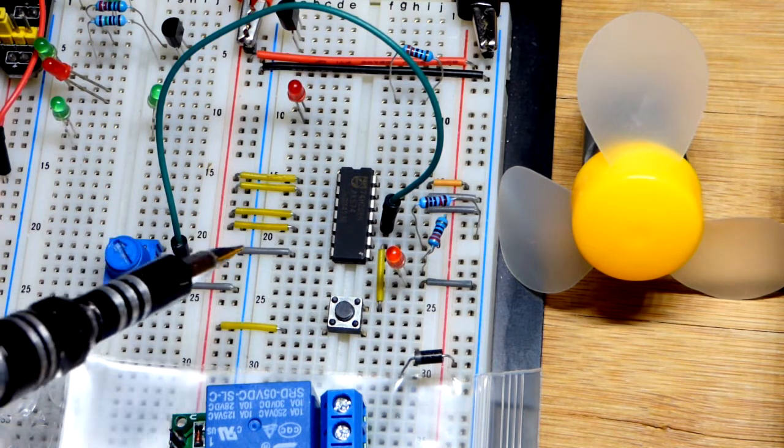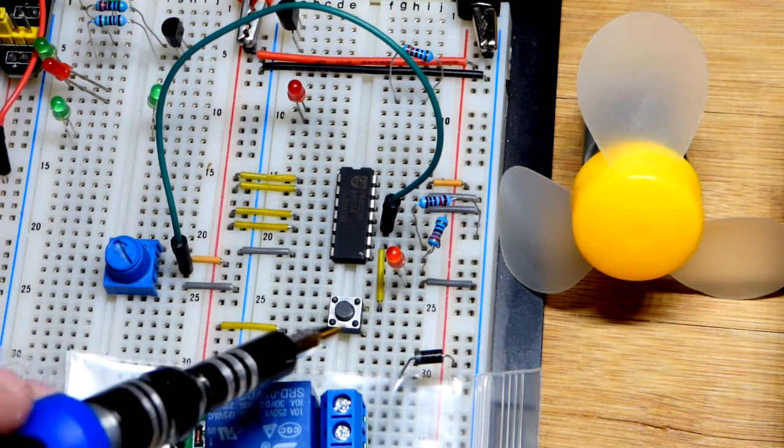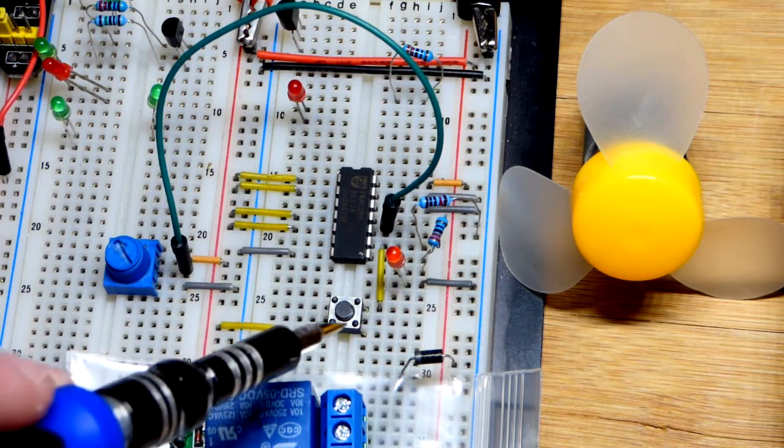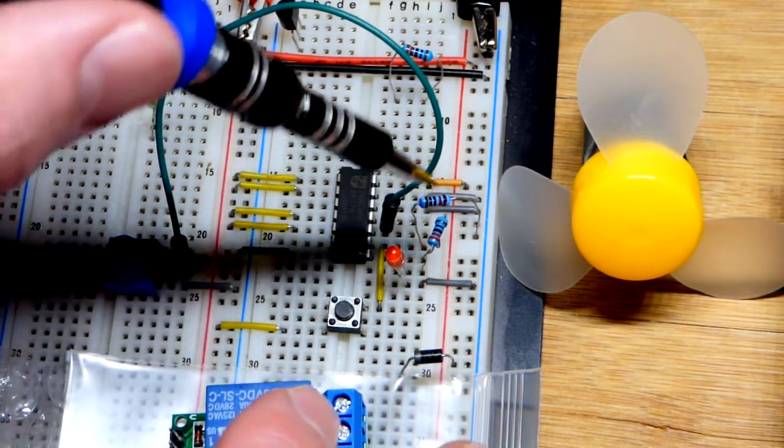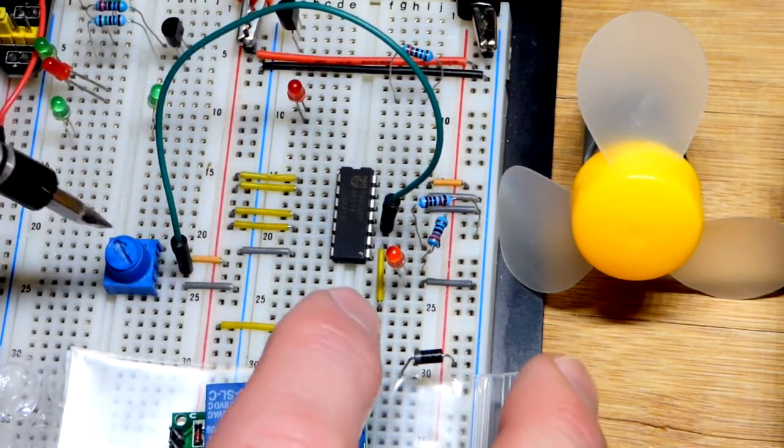The trim pot goes towards the more positive supply and the switch here switches to the positive supply. It does have a pull down resistor, so now one of the inputs is low thanks to that pull down resistor.